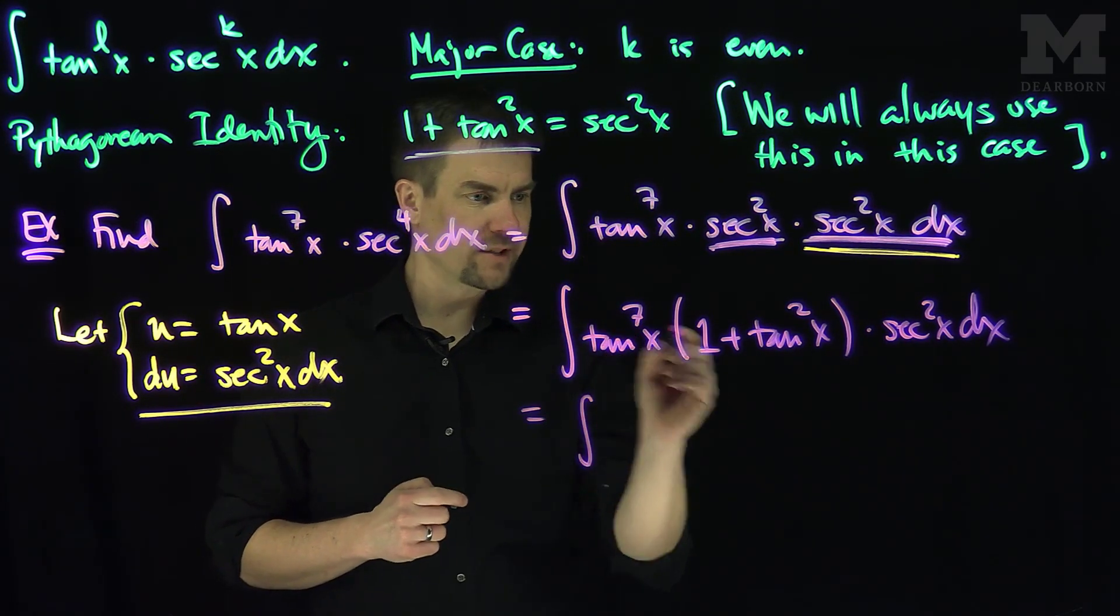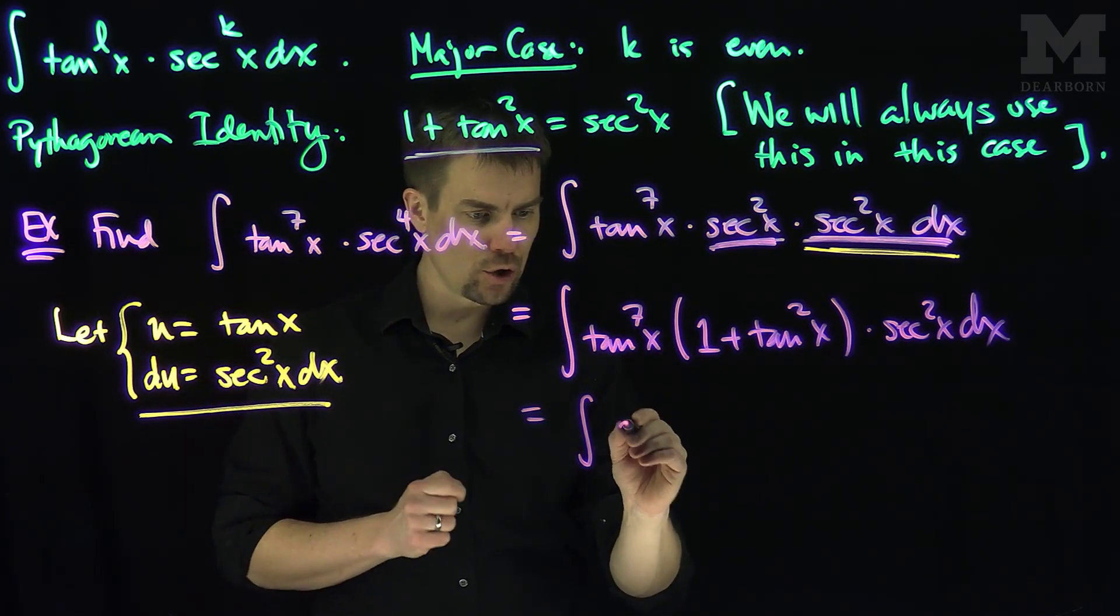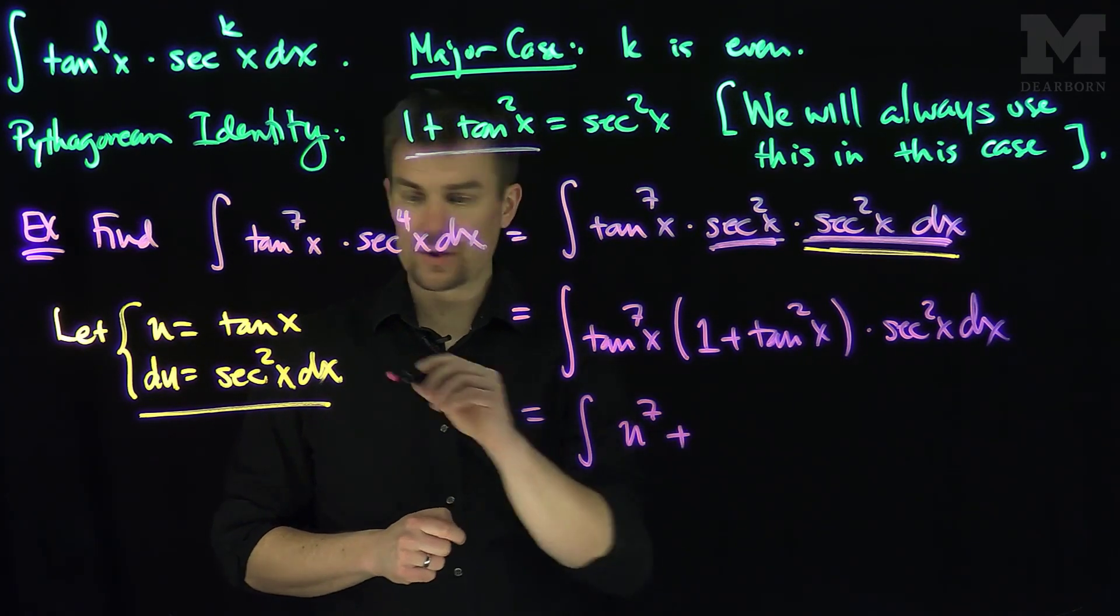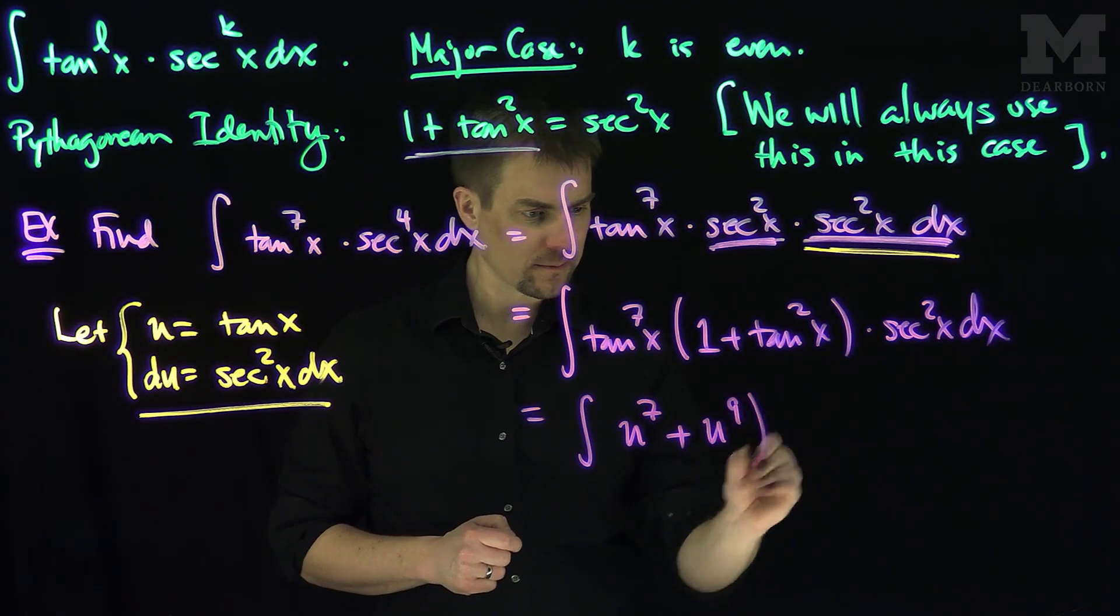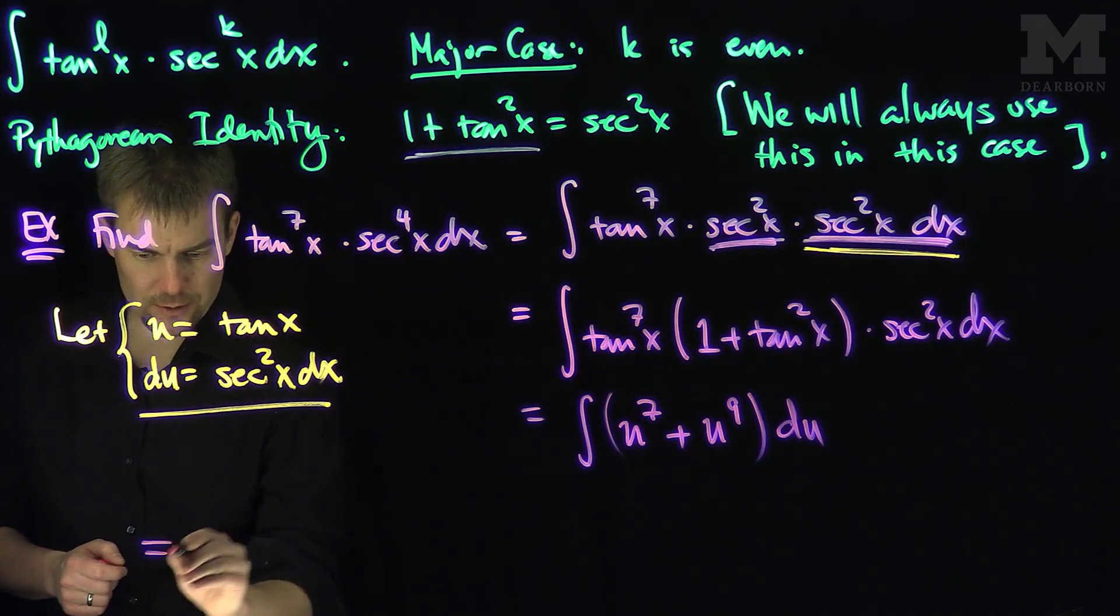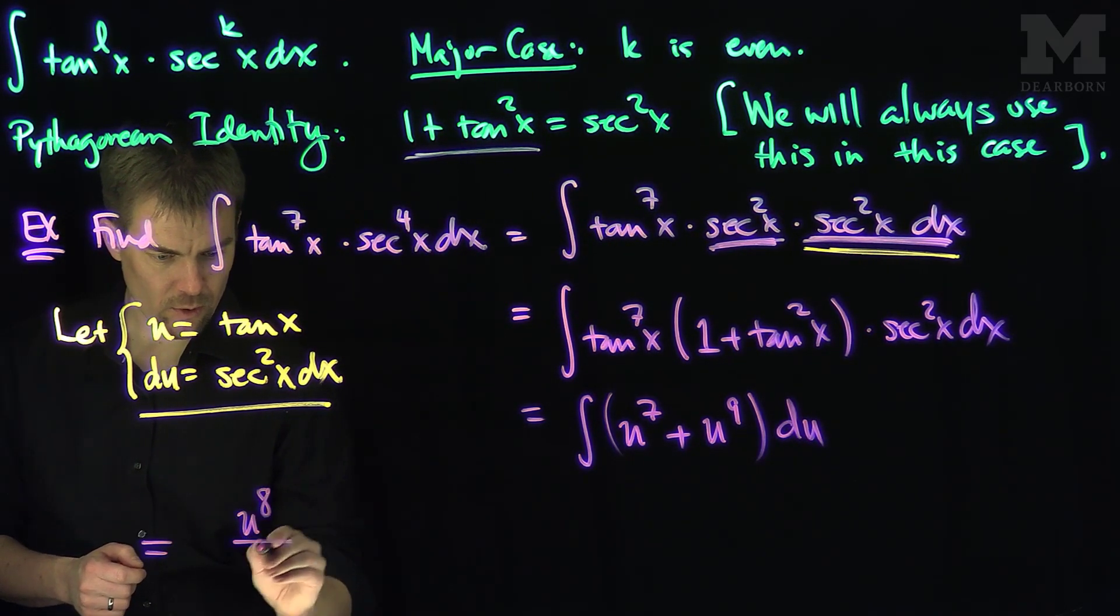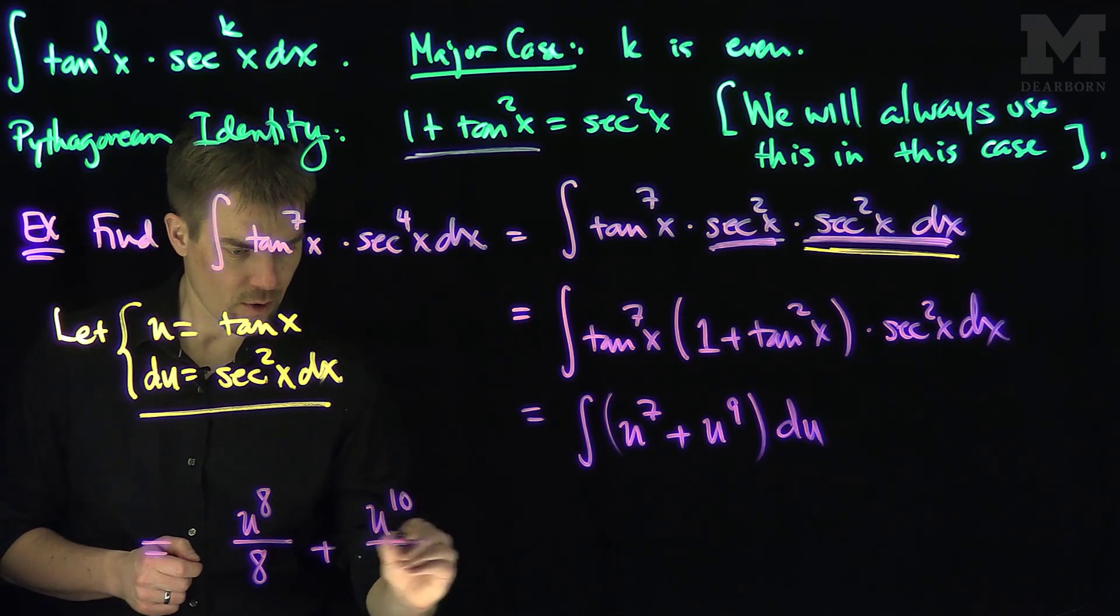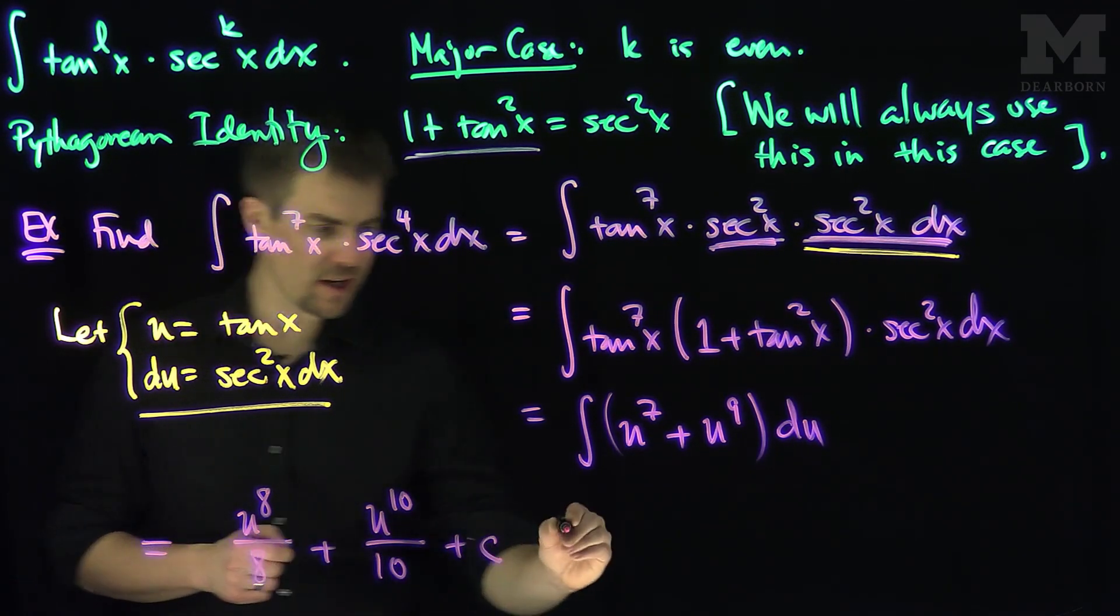This becomes the integral of tangent to the seventh, so that's going to be u to the seventh times 1 plus tangent squared. So that's going to be u to the seventh plus u to the ninth du. This is an easy integral to do. This integrates to u to the eighth over eight plus u to the tenth over ten plus c.